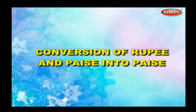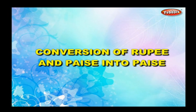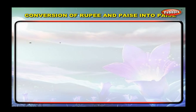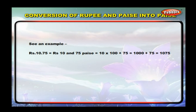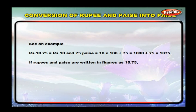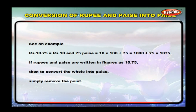Conversion of rupees and paisa into paisa: for example, Rs. 10.75 equals 10 rupees and 75 paisa, which equals 10 × 100 + 75 = 1000 + 75 = 1075 paisa. If rupees and paisa are written as 10.75, to convert the whole into paisa, simply remove the point.